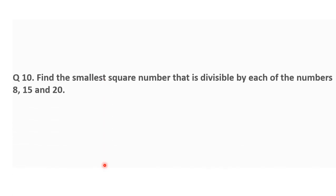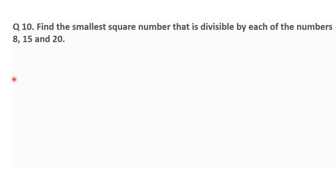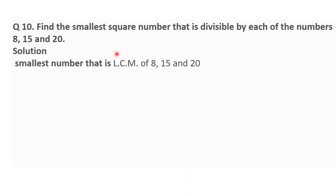Now let's take one more problem — Question number 10: find the smallest square number that is divisible by each of the numbers 8, 15, and 20. It is the same approach as the previous problem, so again we have to find the LCM of 8, 15, and 20.